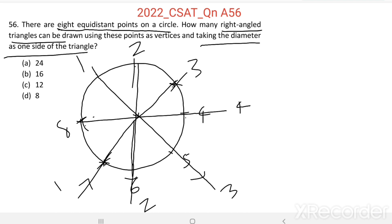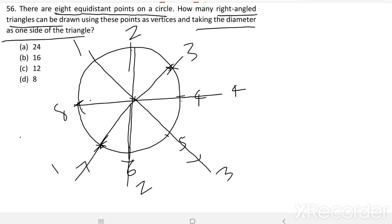Now, let us see how many right-angled triangles can be drawn. 1, 2, 3, 4, 5, 6, 7, 8.